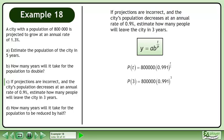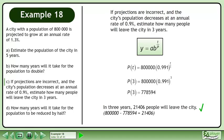Plug in 3 years for the elapsed time. This returns a population of 778,594. In 3 years, 21,406 people will leave the city.